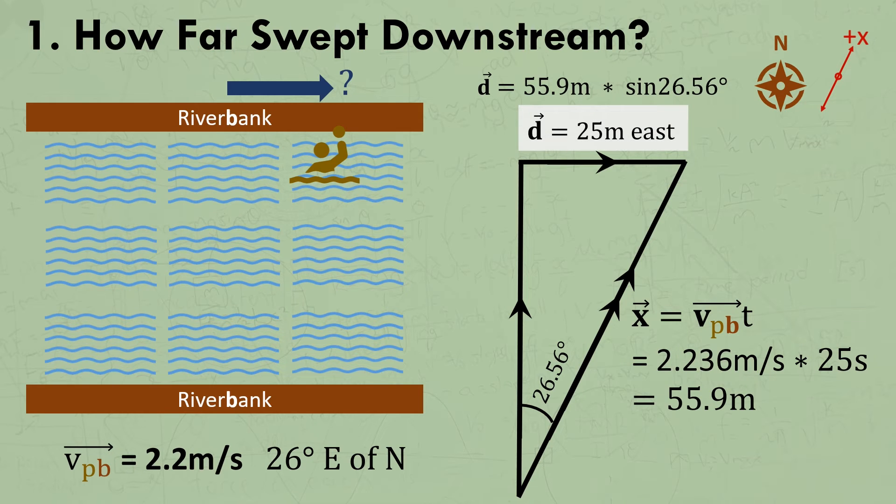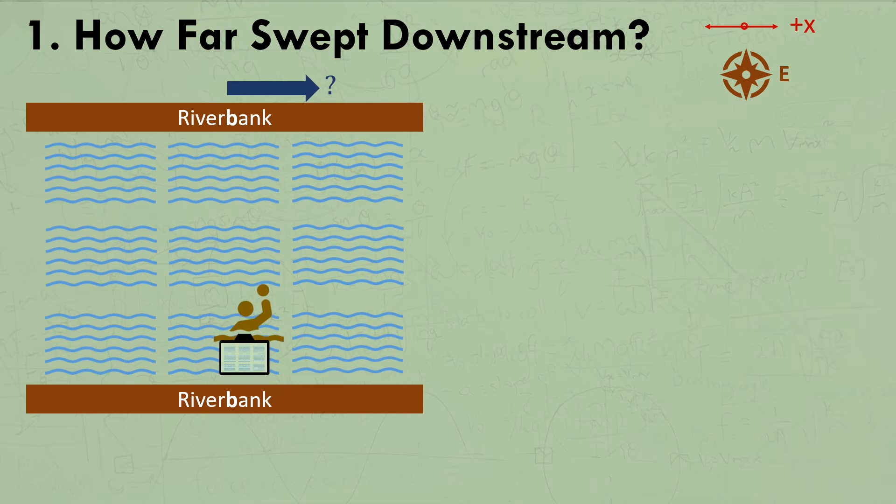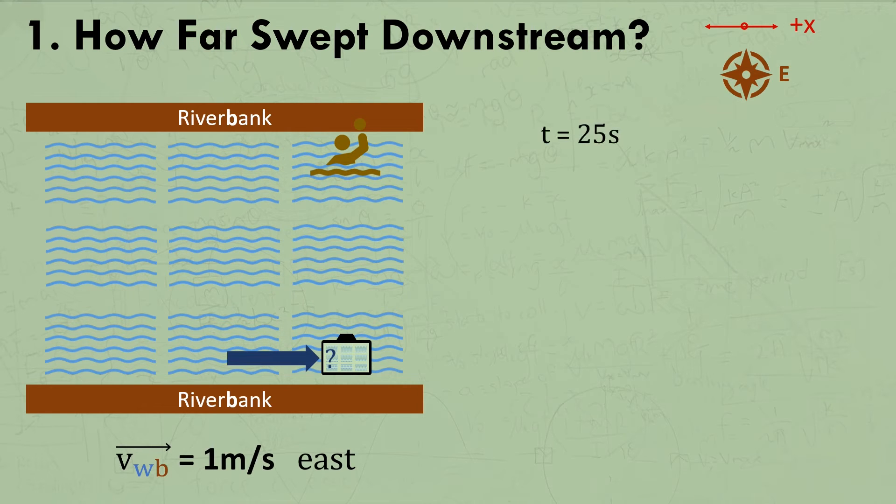This technique certainly works, but if we imagine that camera floating downstream with the student, in the reference frame of the water, then it's easier just to measure this distance instead. So, we can instead use the velocity of the water relative to the bank to get the same answer more easily.